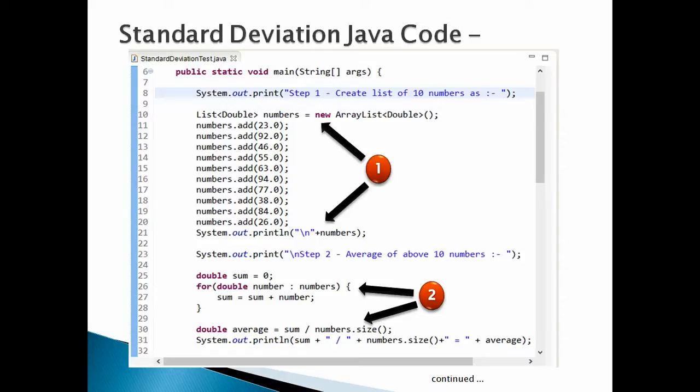Take average of numbers by dividing sum by number of elements in the list. Calling numbers.size method will return the number of elements in this list. Print average on the console. In our case average is 698 divided by 10, which equals to 69.8. Moving ahead.